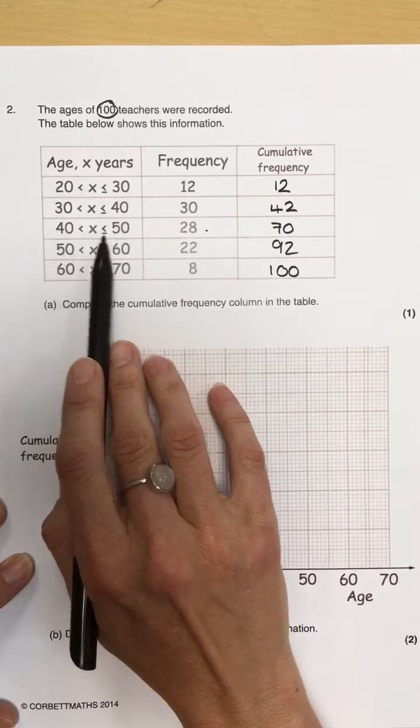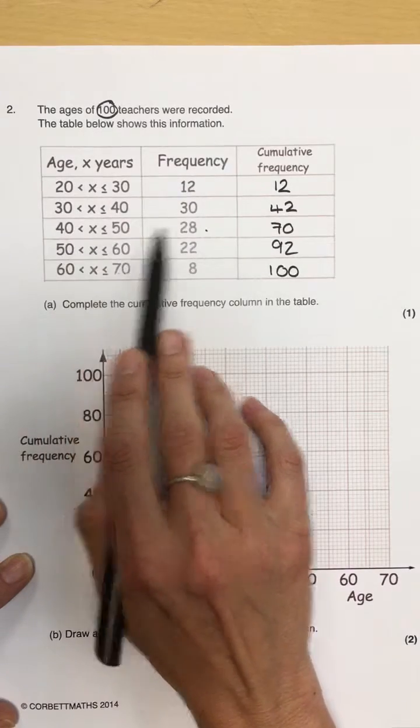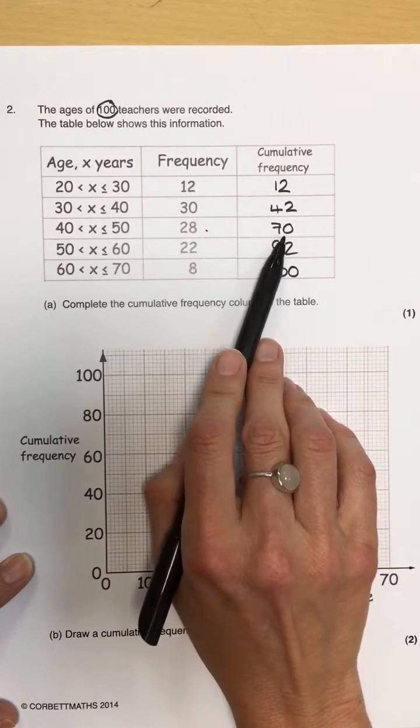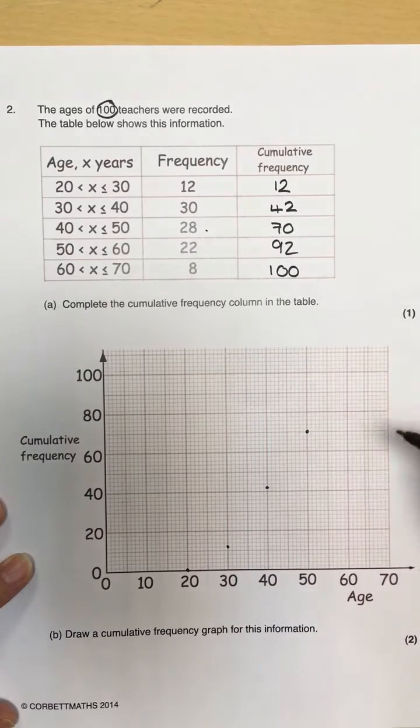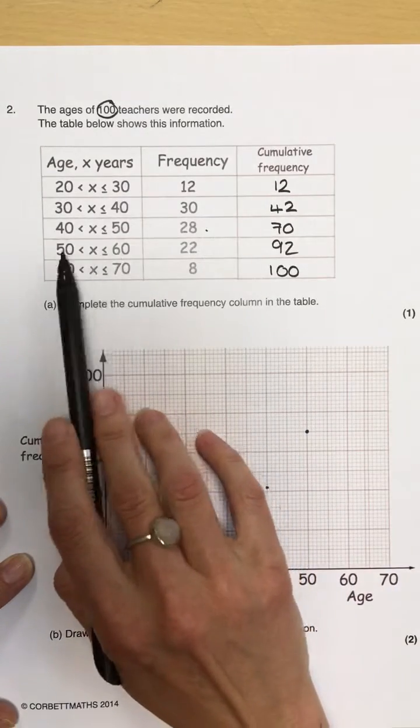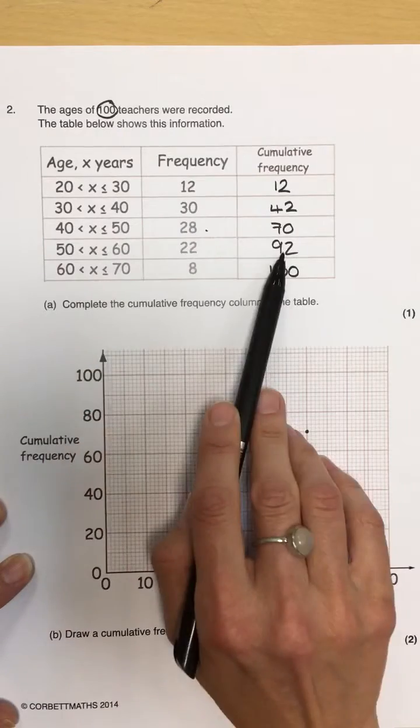When it turns to 40 to 50, so when it's at 50, my cumulative frequency is 70. So, 50 and 70. And then, 50 to 60, so when it's at 60, it's 92.